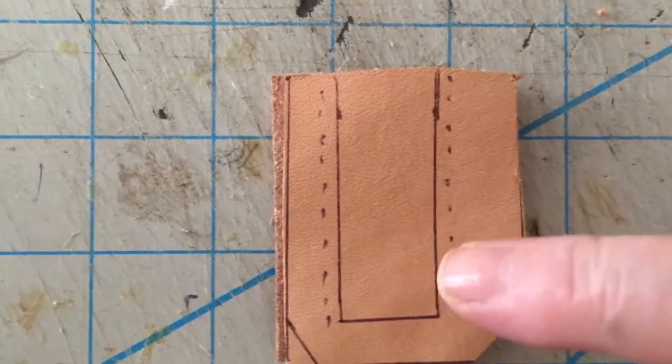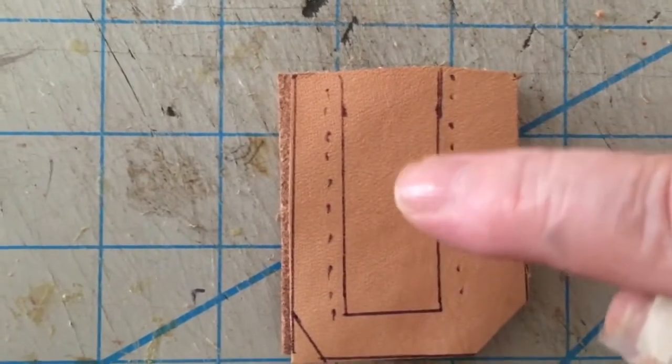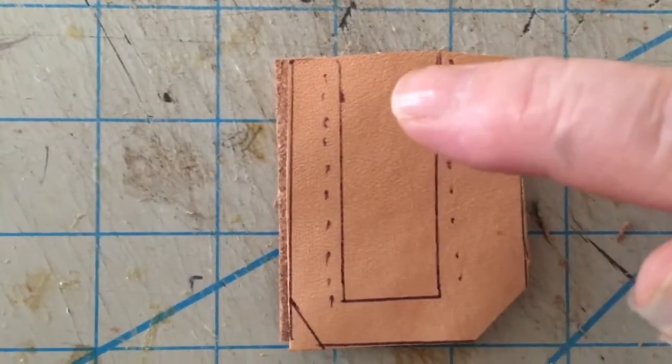And you want to sew along this line right here on both sides. And in the middle that will be open to act as a glove.